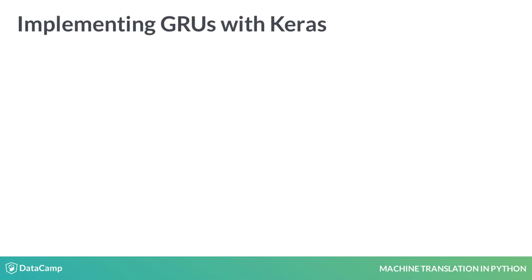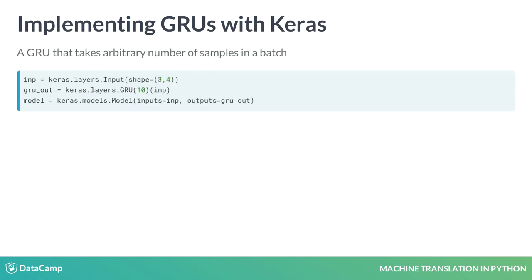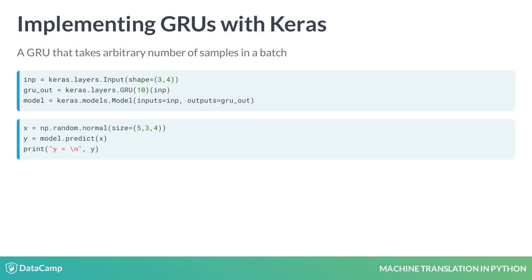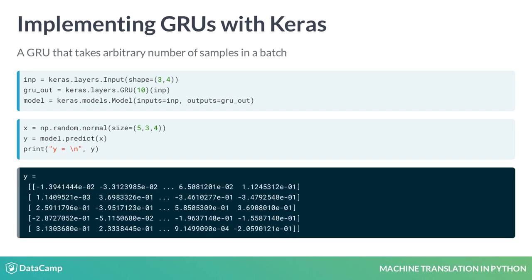You can also define the input layer by setting the batch size to none. To do that, you can use the shape argument instead of batch_shape and only set the sequence length and the input dimensionality. In Keras, doing this means that the input layer will accept any arbitrary-sized batch of data. This allows you to define the Keras model once and experiment with different batch sizes with data.